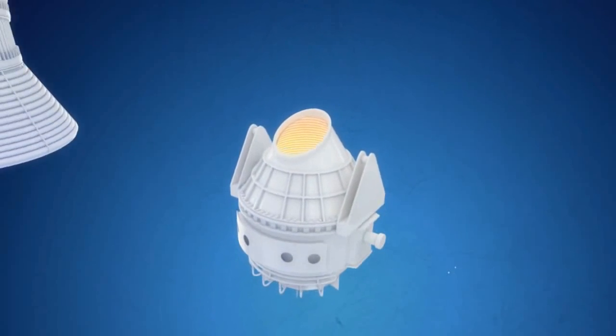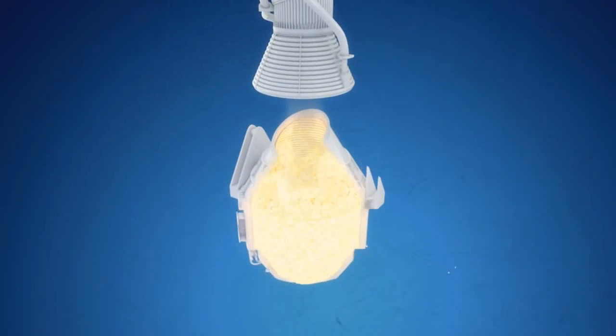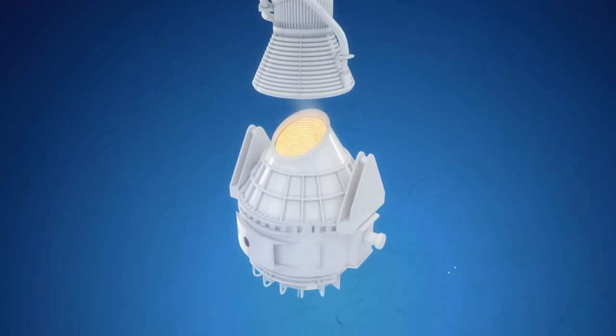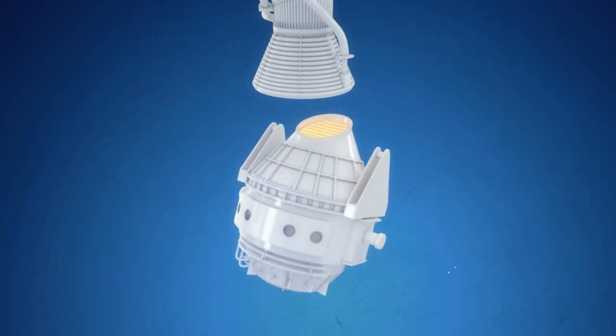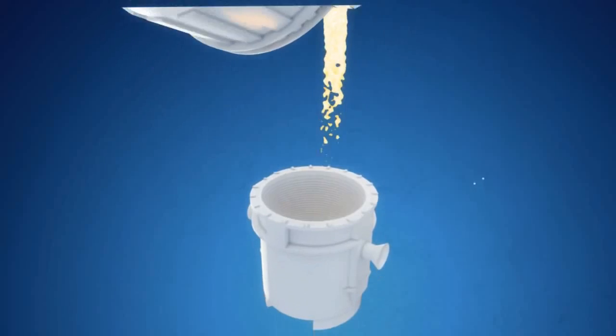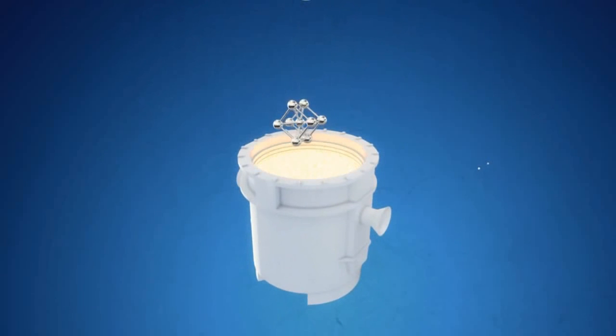Exhaust gases from the furnaces and AOD processes are filtered to cut pollution, and the dust thus extracted is further processed for metal recovery. The melt is transferred to a ladle furnace for fine tuning of temperature and chemical composition.